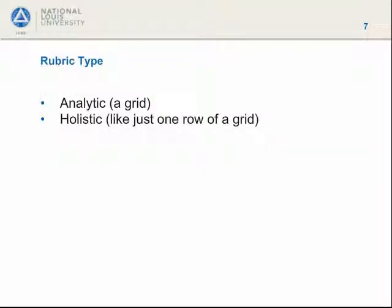Rubric type: analytic or holistic. There are two types of rubrics in D2L — holistic and analytic. A holistic rubric would be like ABCDF with a general description of what each of the grades says about the student's work. An analytic rubric breaks it down into things like thesis statement, supporting evidence, discussion responses, etc. An analytic rubric is a grid, and a holistic rubric is like a grid with just one row.